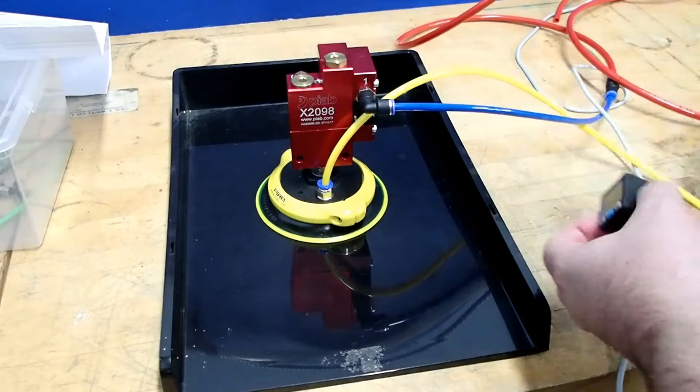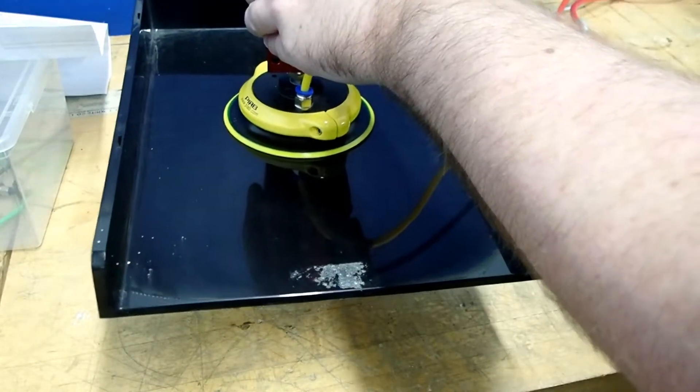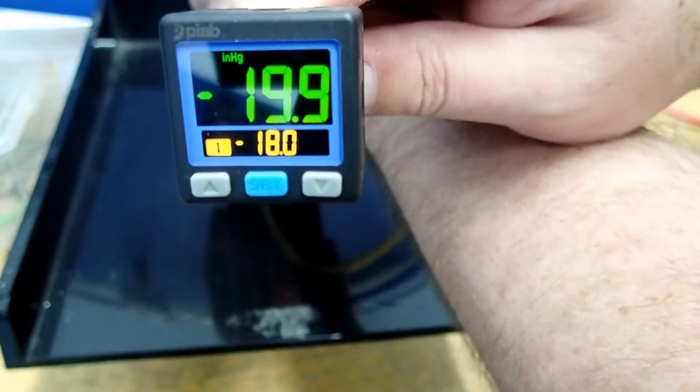Now if we were to turn the air off while holding the unit in the air, such as emergency stop - the air is now off, we're going to maintain our vacuum. You can see there that we're maintaining that pretty well.